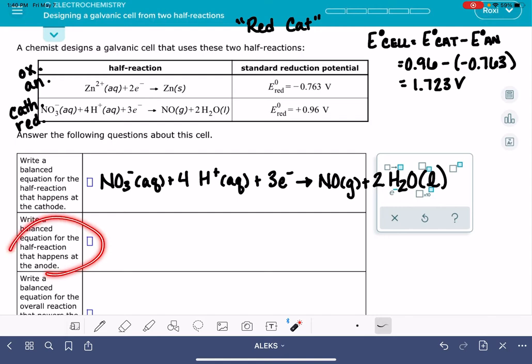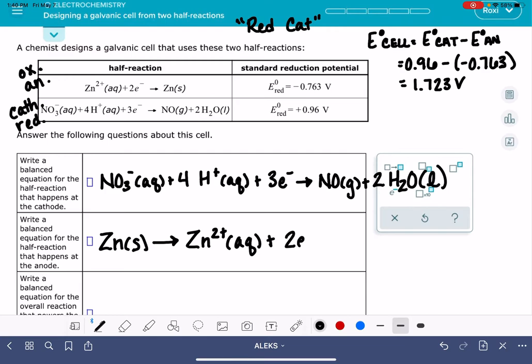Second thing it's asking us is to write the equation that's taking place at the anode. So this reaction is our anode reaction, but at the anode this is an oxidation reaction. And oxidation is the loss of electrons. This is currently written as a reduction where electrons are being gained. So we need to take this reaction because it's happening at the anode and it's an oxidation, and we just need to turn it around. Just write the whole entire thing backwards. Now it is an oxidation reaction.